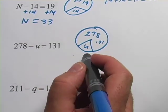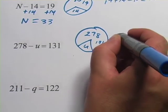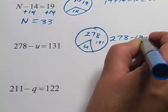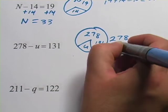So we write this as 278 minus 131, and that equals 147.